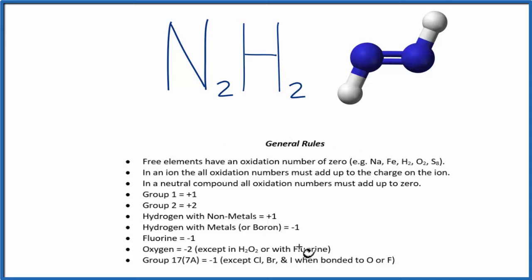We use these general rules to figure out the oxidation numbers. We look down the list and we can see hydrogen, when it's bonded to nonmetals, and nitrogen, those are nonmetals, is going to be plus one. So each hydrogen is going to have an oxidation number of plus one.